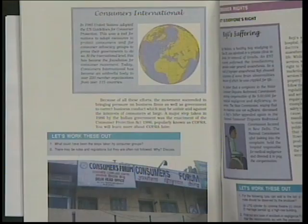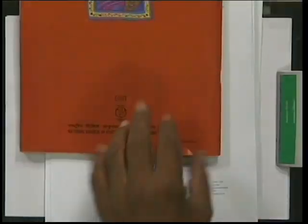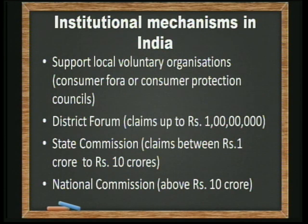Now let us discuss the institutional mechanisms available. When you look at the textbook, many forums were established locally. The government facilitated small groups of people to form consumer protection councils in their area — at the district, taluk, village, or town level. Local voluntary organizations were set up — that was the first initiative. The second step was the government setting up district-level forums. This is the first level forum.